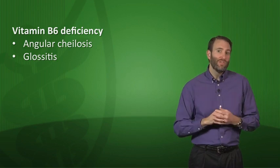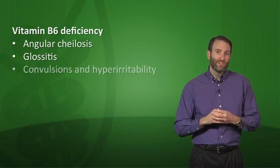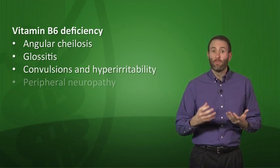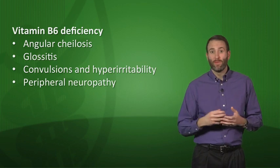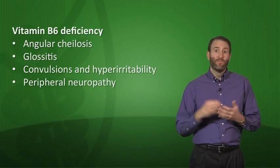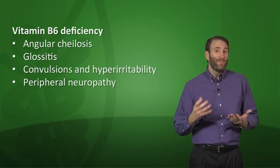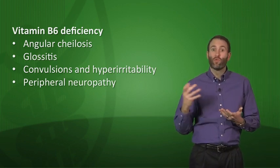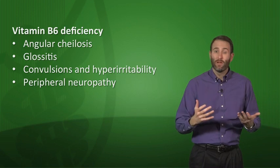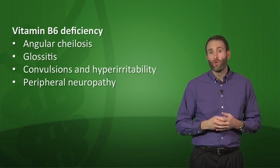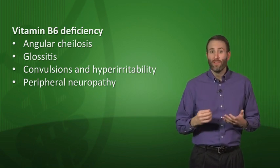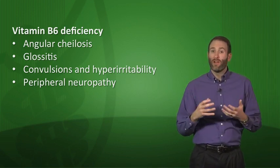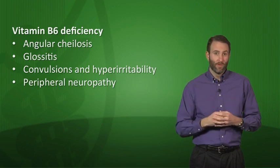Clinically with B6 deficiency, you see many of the same symptoms as riboflavin deficiency — angular cheilosis around the lips and glossitis of the tongue — but unique to B6 deficiency are convulsions, hyperirritability, and peripheral neuropathy. The convulsions occur because B6 is essential for creating GABA, the main inhibitory neurotransmitter of the brain. Without GABA, the brain becomes excitable and you get convulsions.